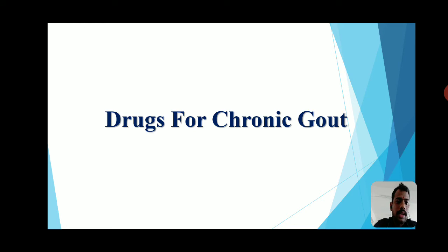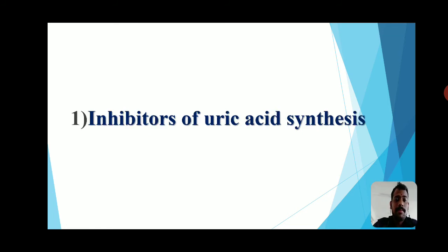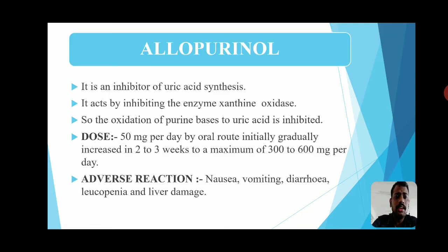Regarding the difference: acute gout means a short-duration but high-pain disorder, while chronic gout is a long-duration, progressive disease. For chronic gout, the first category is inhibitors of uric acid synthesis, which reduce uric acid production in the body. The main drug in this category is allopurinol.